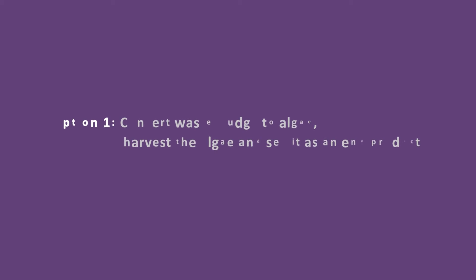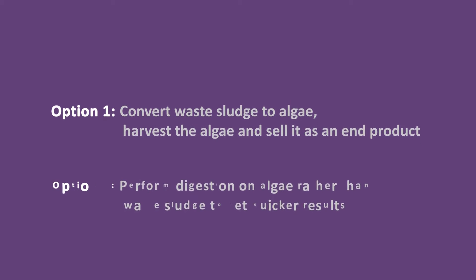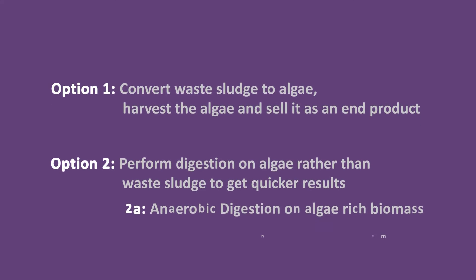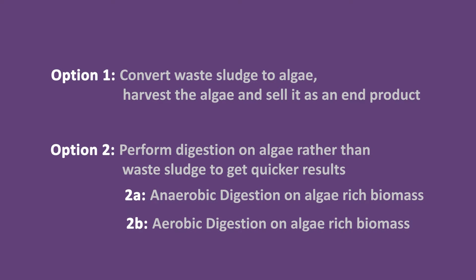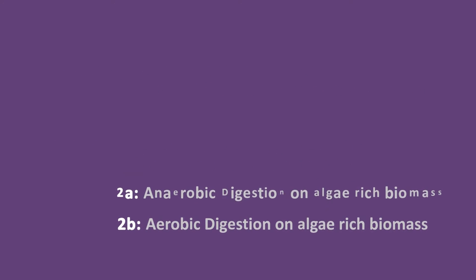Based on lab research and pilot plant studies, OVIVO has identified two major applications. One application involves harvesting algae off wastewater or biological sludge to collect a sellable end product. The other involves use of algae to enhance both aerobic and anaerobic digestion, resulting in 50 percent or more reduction in retention time requirements.